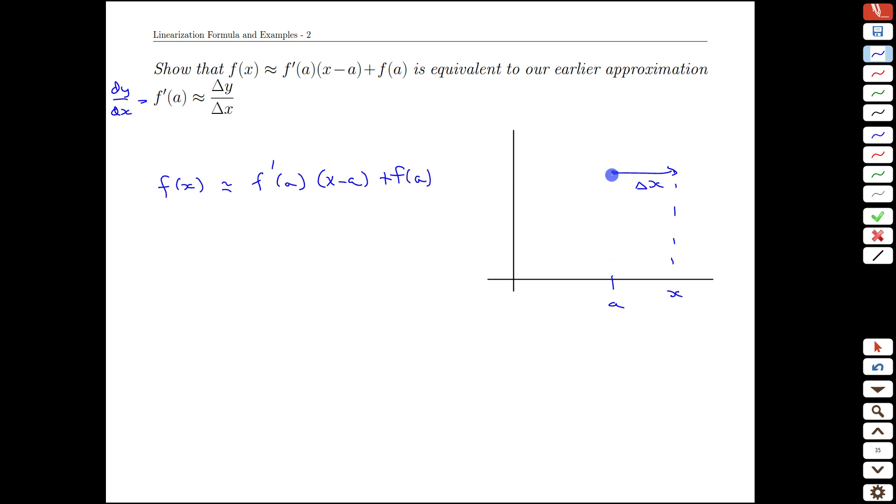If we're building our estimate around a, the distance from x to a is exactly what delta x is. So f of x is approximately the slope times delta x, plus f of a. Let's bring f of a to the other side: f of x minus f of a is approximately f prime of a times delta x.